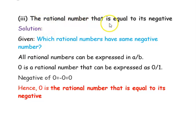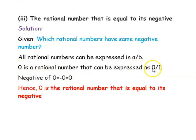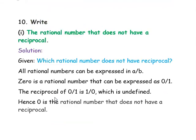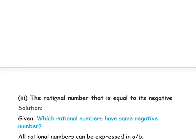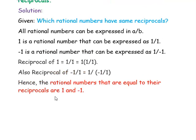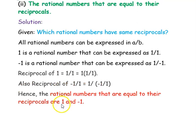The next question is: find the rational number that is equal to its negative. All rational numbers can be expressed in the form a/b. Only the rational number 0 can be expressed as 0/1, and the negative of 0 is also 0. So we can clearly say that 0 is the rational number that is equal to its negative. In summary: 0 is the rational number with no reciprocal, 0 is the rational number equal to its negative, and 1 and -1 are the rational numbers equal to their own reciprocals.